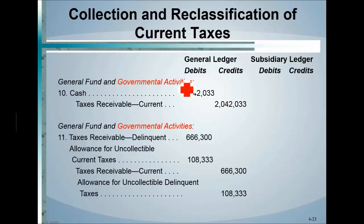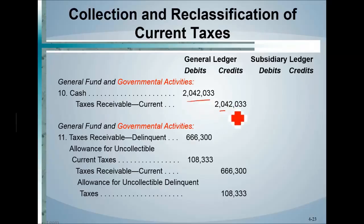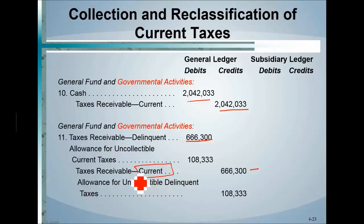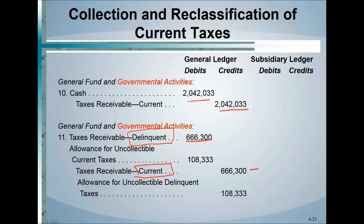As cash is collected, both the general fund and government-wide statements reduce the receivable. When taxes are late, a delinquent taxes receivable is set up and the current taxes receivable is reduced — distinguishing currently receivable from late. This classification is done on the government-wide side using accrual basis accounting.